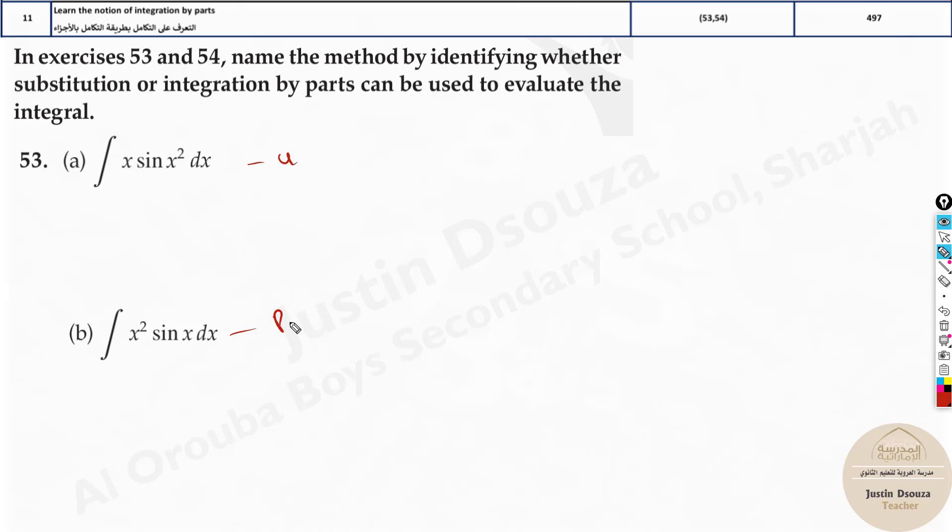Looking at this, I can tell this is by u substitution, not by integration by parts. Whereas this is integration by parts. How did I tell that? The trick is very easy. Look into the terms. It's x and sin x squared.